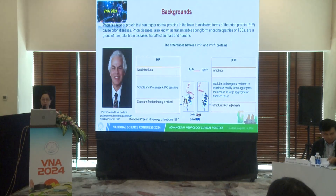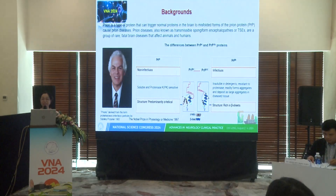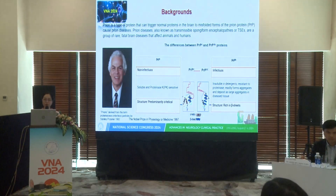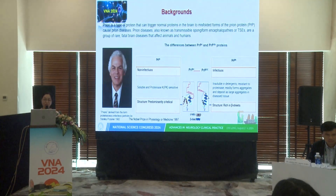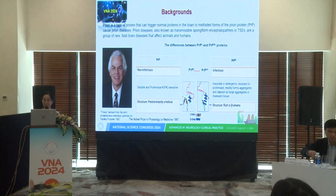A prion is a type of protein that can trigger normal proteins in the brain to misfold, causing prion disease. In the picture, you can see the difference between the PrPC and PrPSc protein.